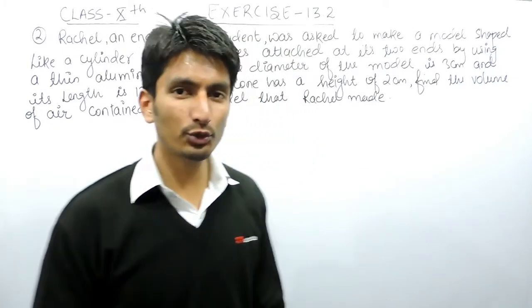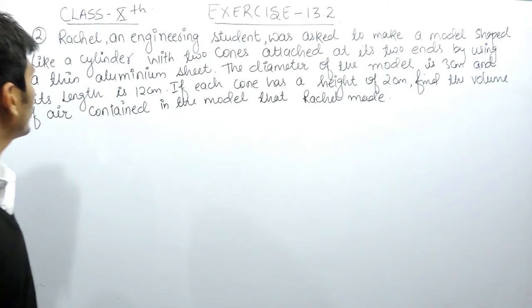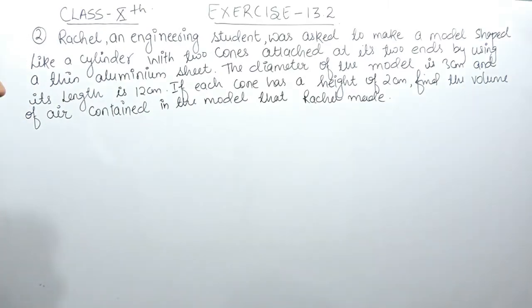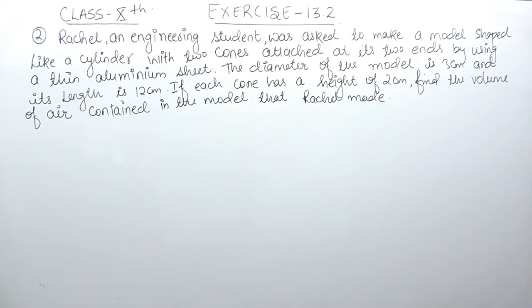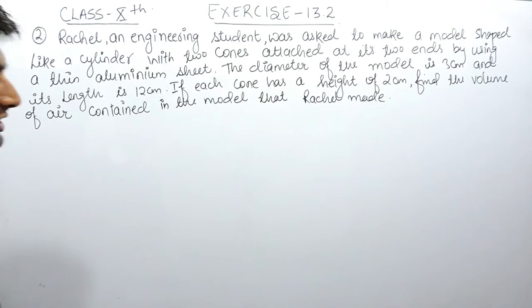Hello everyone, we are from True Maths and in this video we are going to solve question number 2 of exercise 13.2. The question says: Rachel, an engineering student, was asked to make a model shaped like a cylinder with two cones attached at its two ends by using a thin aluminium sheet. The diameter of the model is 3 cm and its length is 12 cm. If each cone has a height of 2 cm, find the volume of air contained in the model that Rachel made.